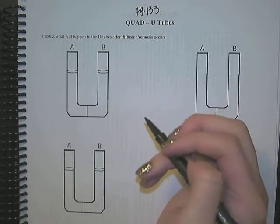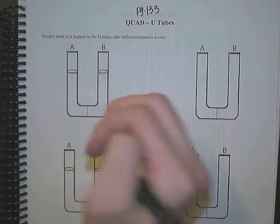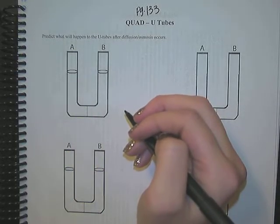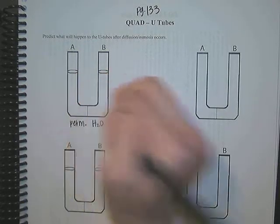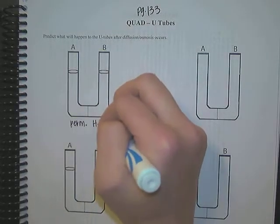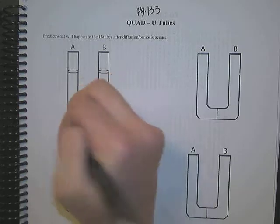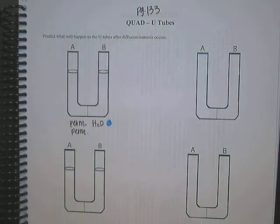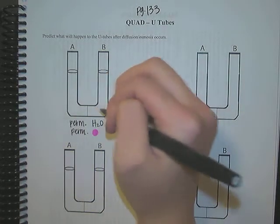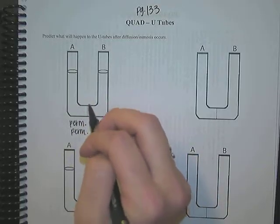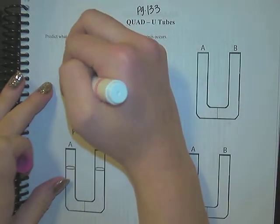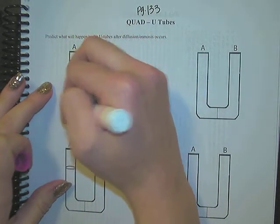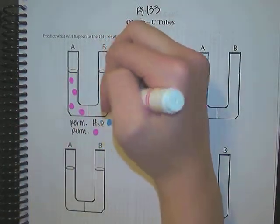In my first example, I'm going to do a pretty easy one. Let's say that the semi-permeable membrane is permeable to water, which I'll represent with blue dots, and let's say it's also permeable to these pink dots. So both the pink dots and the blue dots are able to cross through the semi-permeable membrane in order to reach homeostasis. Let's say that I start out with a higher concentration of pink solutes on the left side than on the right side.